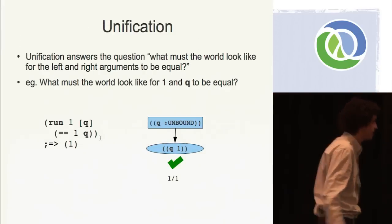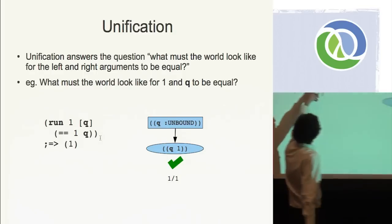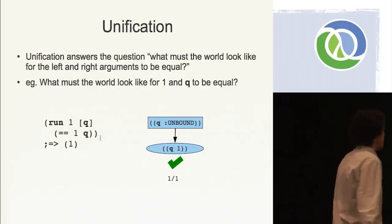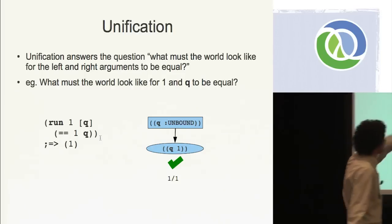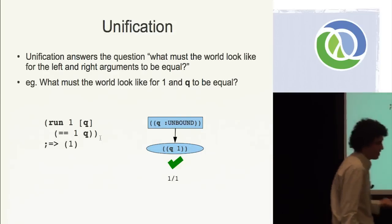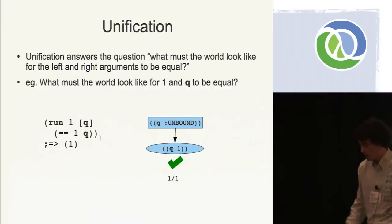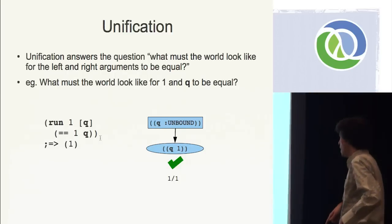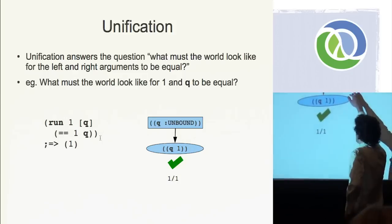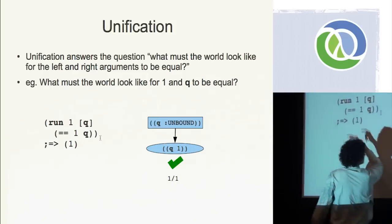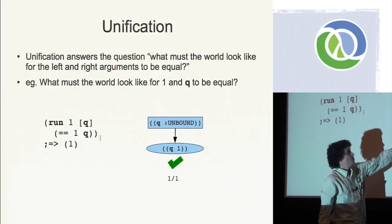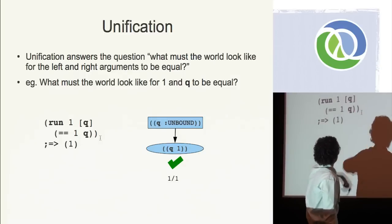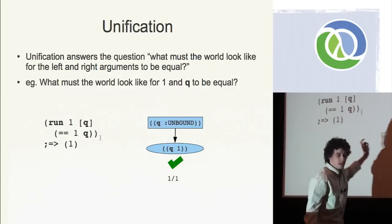A very important goal is unification. This == function is not clojure.core/== — it's pronounced "unify." It takes two arguments, and unification answers the question: what must the world look like for the left and right arguments to be equal? If it can make them equal, it'll find the next world — the next snapshot — such that both are equal. In our run, we want one value of q such that one is unified with q. The initial substitution has q unbound, and we ask what must the world look like for one to equal q. What unification does is spit out the next world state where q equals one, because that's a world where one equals q. It's kind of like assignment, except it's more general than assignment.